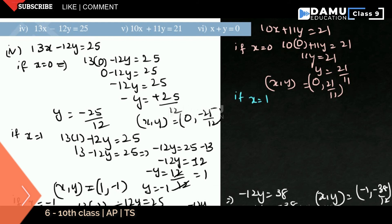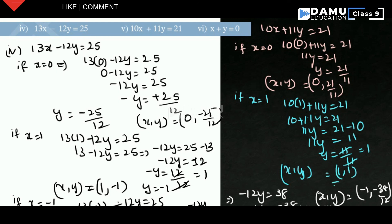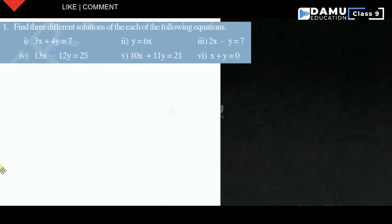For the second solution of 10x + 11y = 21, if x = 1, then 10 + 11y = 21, so 11y = 11, giving y = 1. The solution is (1, 1).